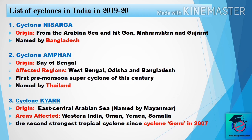The second one is Cyclone Amphan. Its origin was from the Bay of Bengal and the affected regions were West Bengal, Odisha, and Bangladesh. This is the first pre-monsoon super cyclone of this century, and the name Amphan was suggested by Thailand.